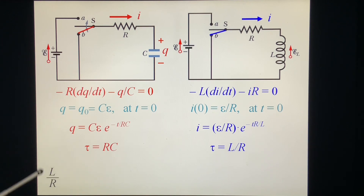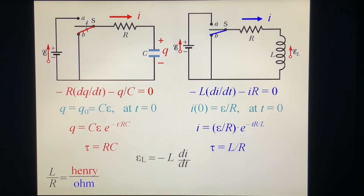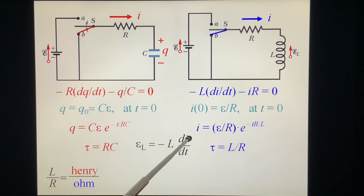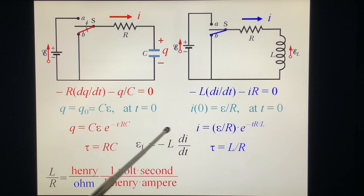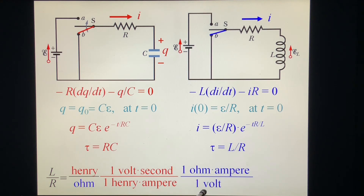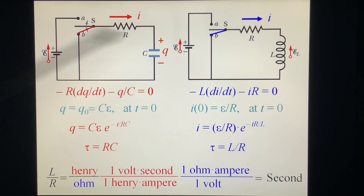We prove that L/R has a dimension of time (seconds). From the equation: L/R — henry divided by ohm — equals volt·second divided by volt, which simplifies. One volt equals ohm times ampere. Volt cancels out, ampere cancels out, ohm cancels out, confirming that L/R has the dimension of time.